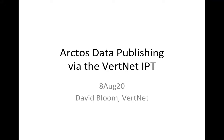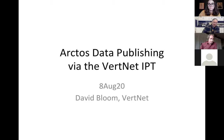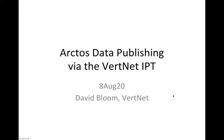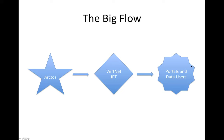The key thing we're going to walk through is the data publishing pipeline from Arctos to the rest of the world. This is the big flow — it's very simple and straightforward. Most of what happens in the big flow happens behind the scenes and is generally not anything that you as data publishers need to worry about.